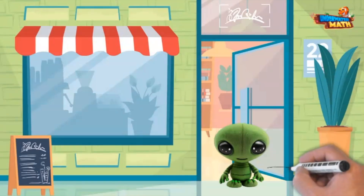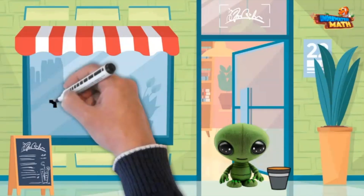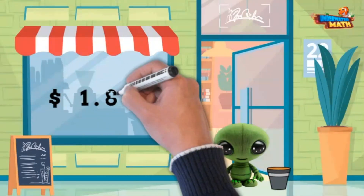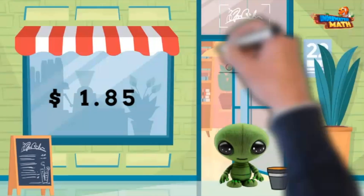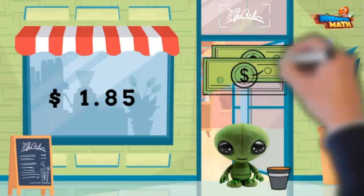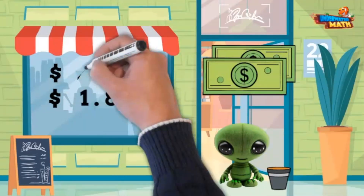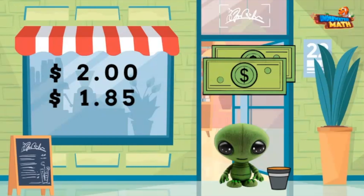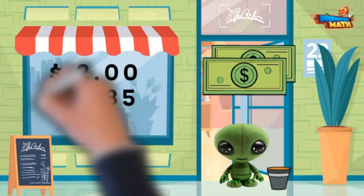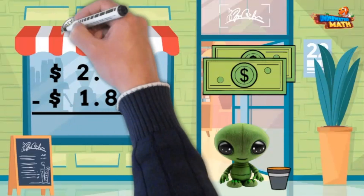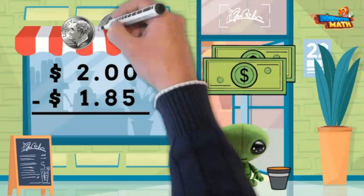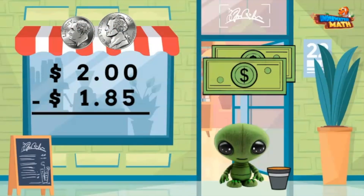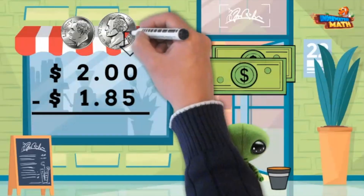I bought an item that costs one dollar and 85 cents. I gave the cashier two dollars. I want to know how much change I will get back. Two dollars minus one dollar and 85 cents equals 15 cents. To solve, we can count up 15 cents, or we can subtract using the standard algorithm.